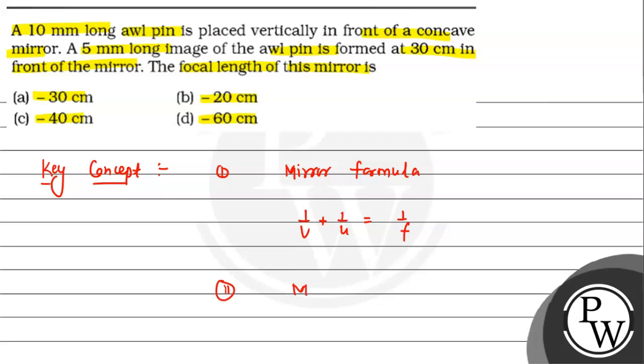Second, we use formula of magnification. Magnification formula: M equals height of image HI upon height of object HO equals minus V upon U. V and U are the signs that we have previously explained.